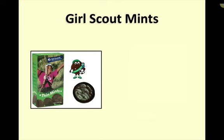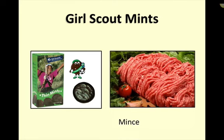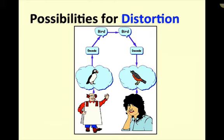When my wife was very young, a Scottish family moved in next door — people who speak the same language. Girl Scouts came around selling mints. 'Would you like to buy a box of mints for a dollar?' Sounds like a good deal — they took a couple of boxes. Were they surprised when they got boxes of cookies? Because they were expecting mince — M-I-N-C-E — ground meat. And to them, these kinds of things are biscuits. Same object, different symbol. Look at the possibilities for distortion when you use words to communicate.